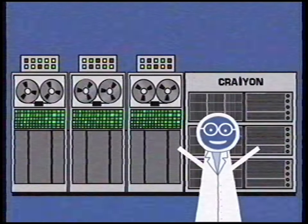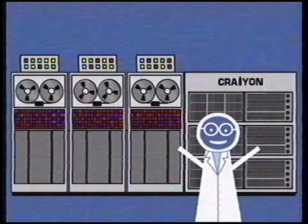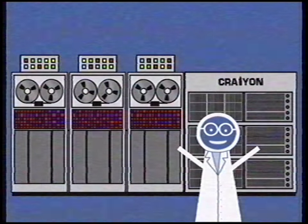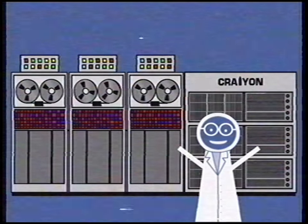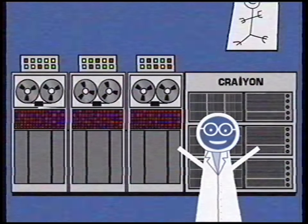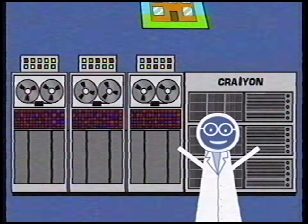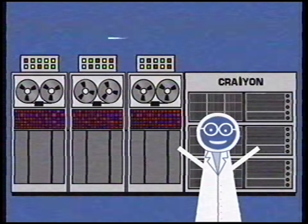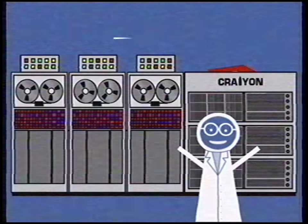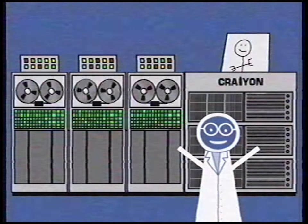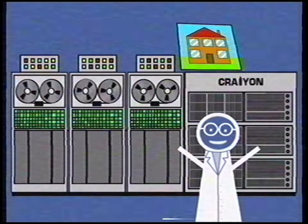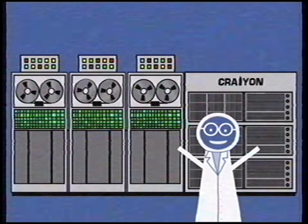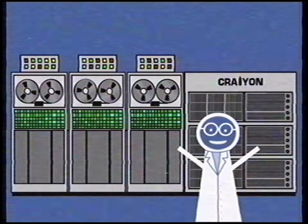The people of Crayon programmed a powerful computer and turned it into a self-learning machine. They gave the computer so many examples of drawings and text that the computer learned to read and draw.